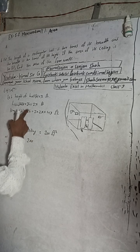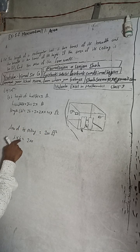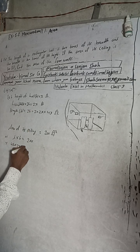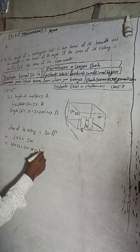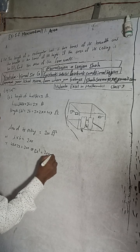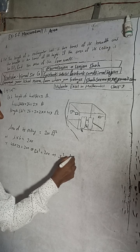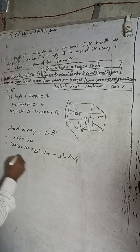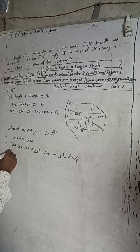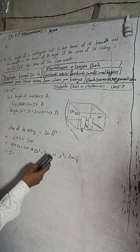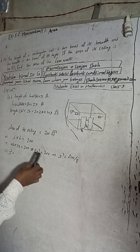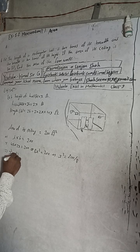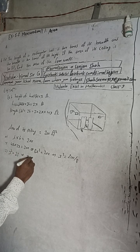The area of the ceiling equals 200 square feet. Length times breadth equals 4x times 2x, which gives 8x². So 8x² equals 200. This implies x² equals 200 divided by 8, which gives x² equals 25.